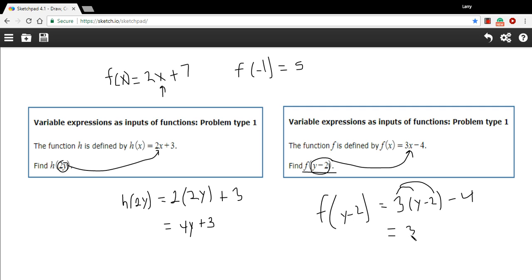3 times y is 3y. 3 times negative 2 is negative 6. And then we have our minus 4. And we can combine the negative 6 and the negative 4. So we get 3y minus 10.